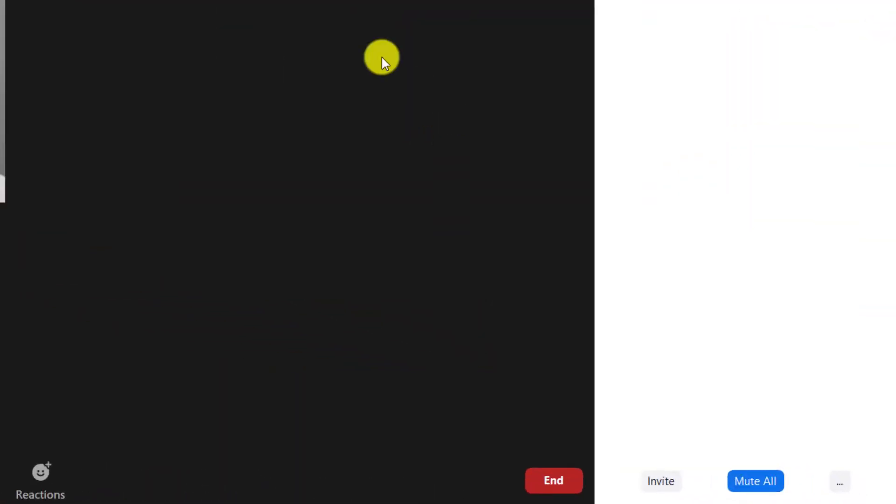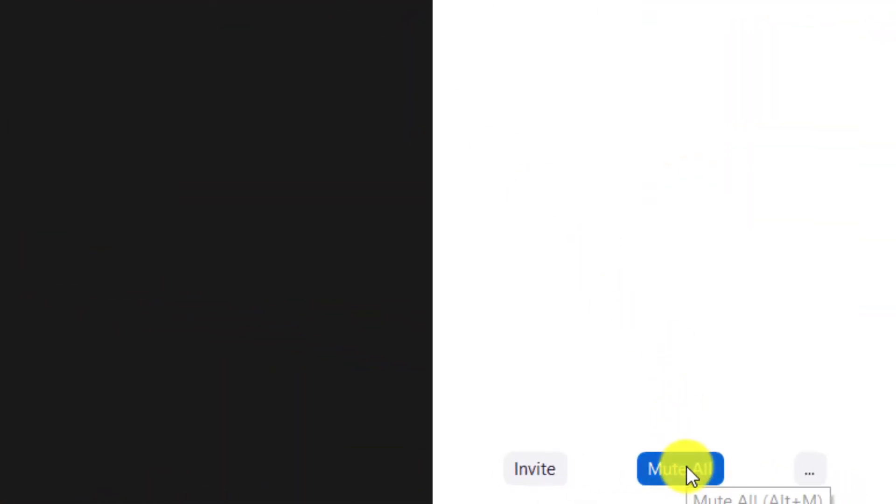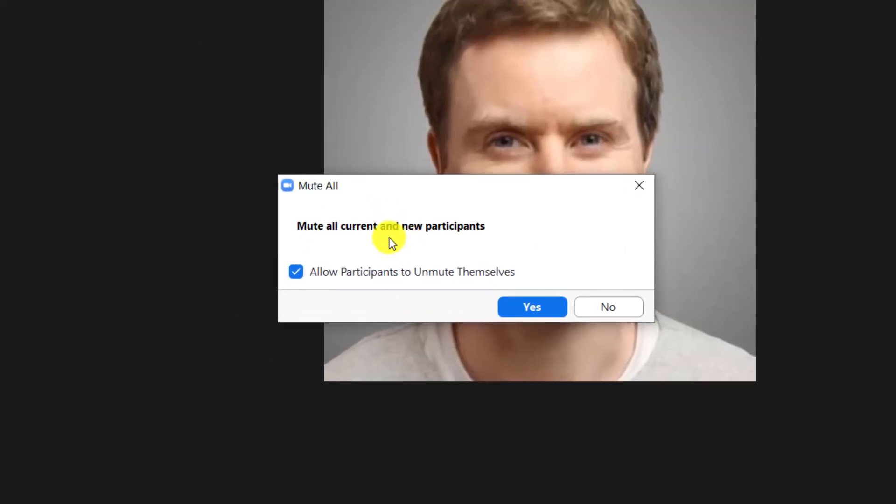If you are already in a meeting, open the participants panel on the right of the screen and click the button to mute all. A window appears confirming that this will mute all the current participants and any new ones that join later.